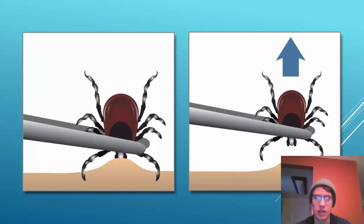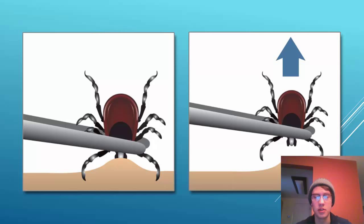I learned that you're supposed to burn the tick off or grab and twist it, but in researching this presentation I found that's the worst way to do it — the tick can regurgitate more saliva, or burning and twisting can leave part of its body inside you. The correct method is to take fine-pointed tweezers, get as close to the skin as possible, grab onto the mouthpiece of the tick, and pull straight up slowly. That's the best way to ensure it doesn't regurgitate into you.